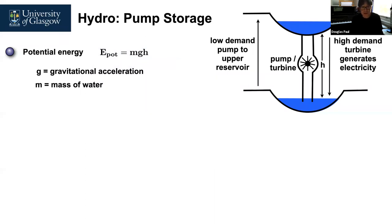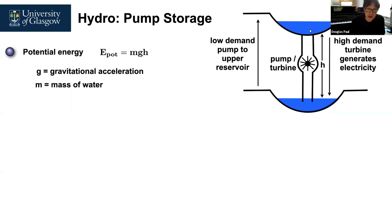Another type of hydro scheme uses a reservoir, lake, or loch at a much higher level than somewhere lower, where you drop the water down. The height ideally wants to be as large as possible. You can calculate the potential energy of storing that mass of water at a given height using: potential energy equals mass times gravitational acceleration (9.81 m/s²) times height.